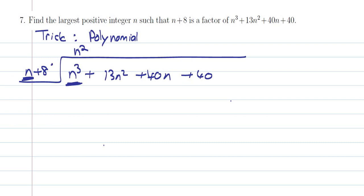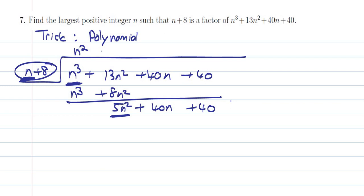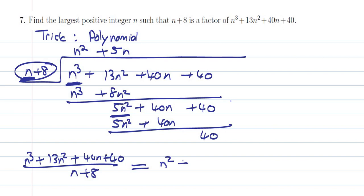I multiply the whole divisor by n squared, so n plus 8 times n squared becomes n cubed plus 8n squared. Subtracting gives 5n squared plus 40n plus 40. Then n times what gives me 5n? It's 5n. Multiply and subtract to get remainder 40. So the quotient is n squared plus 5n and the remainder is 40 over n plus 8.